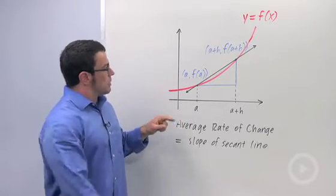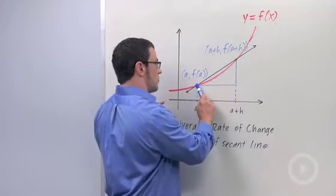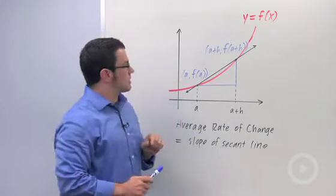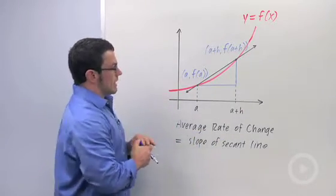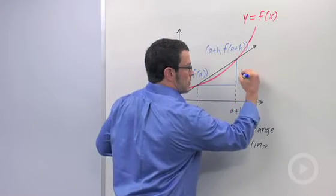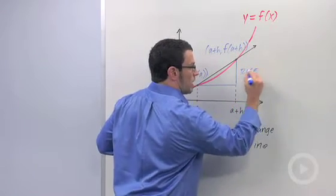Recall that average rate of change of a function is the slope of the secant line drawn between two points on the function. The slope of the secant line, like any other slope, is going to be rise over run.